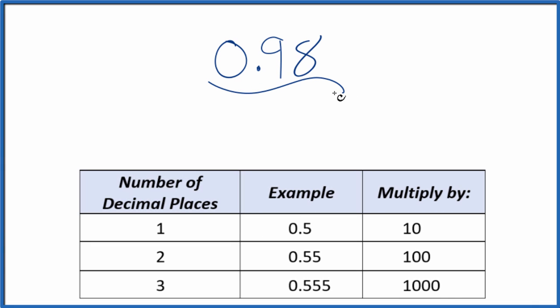Let's write the decimal 0.98 as a fraction. So the first thing we want to do, let's call it 0.98 over 1. It's still 0.98. We're just dividing by 1. It doesn't change the value, but now we have the start of a fraction.